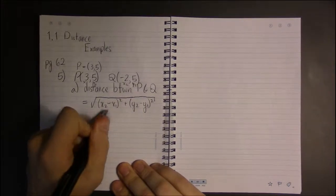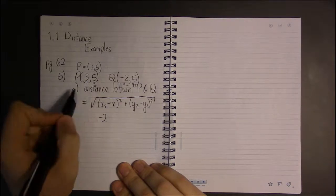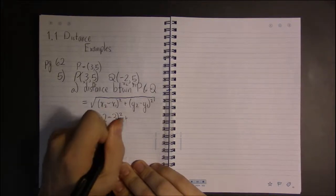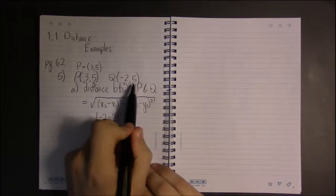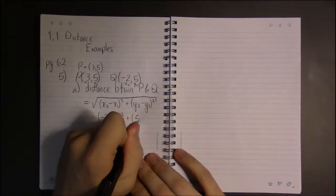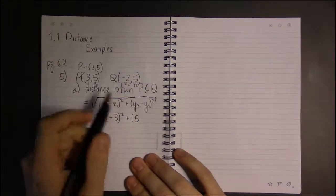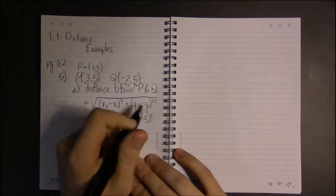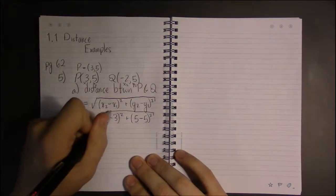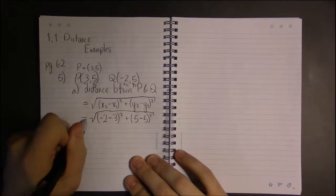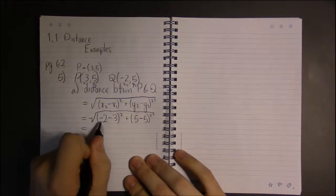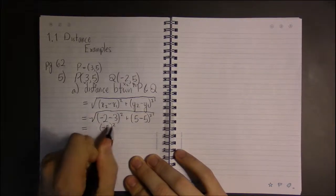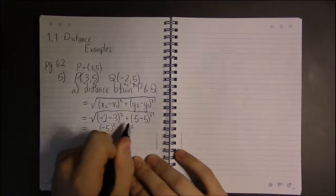So x2 is -2, 3 is x1, y2 is 5, and y1 is 5 as well. -2 minus 3 is -5, 5 minus 5 is 0.